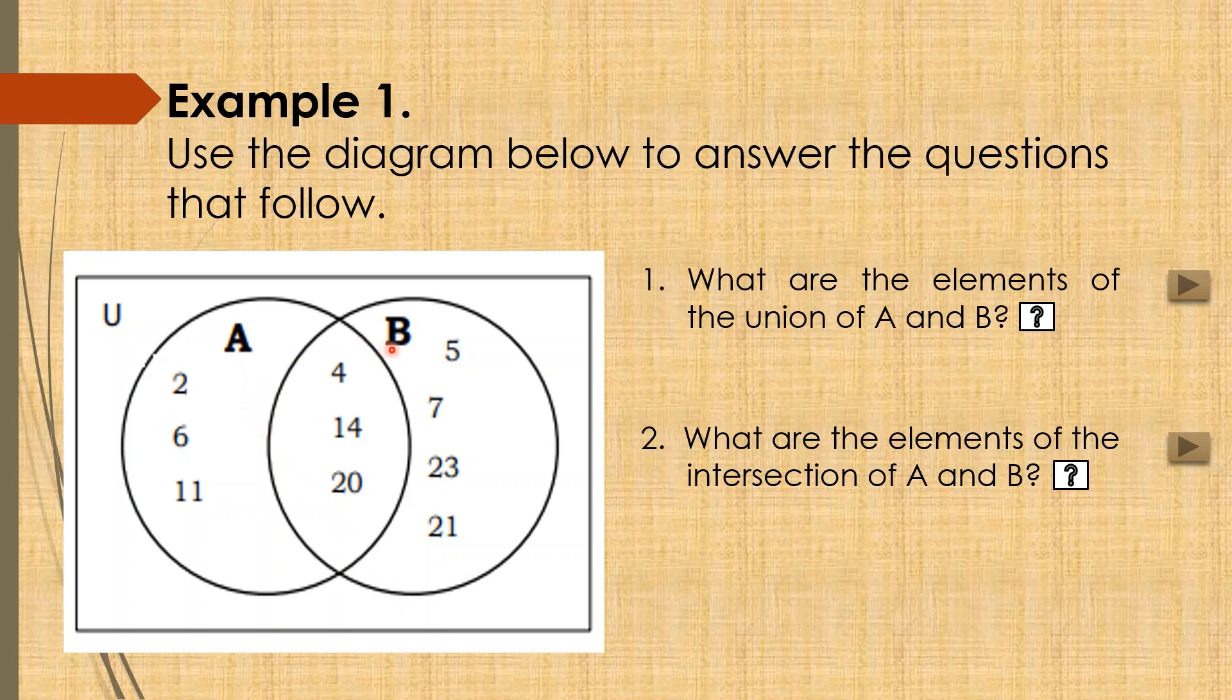What are the elements of set A? So the elements or members of set A are 2, 4, 6, 14, 11, and 20. While set B have elements 4, 5, 14, 7, 20, 23, and 21.